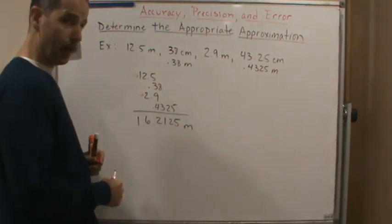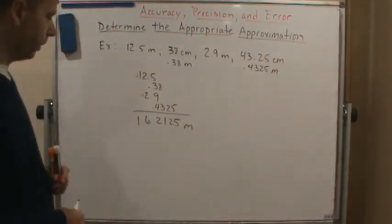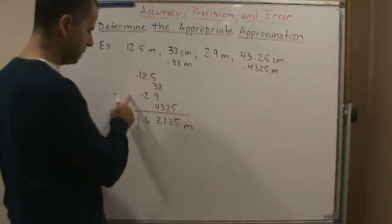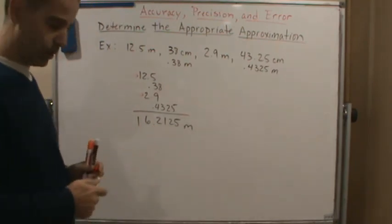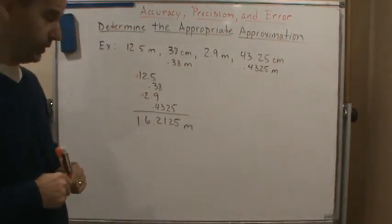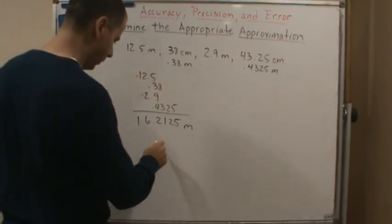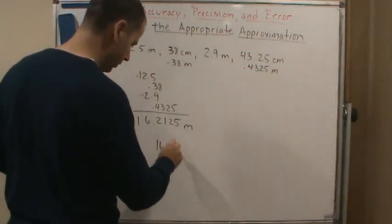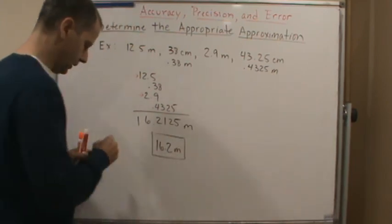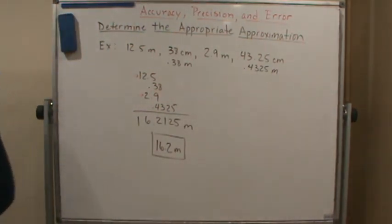This measures up to one ten thousandth of a meter. So these two are the least precise. They're the same. So we're going to round to the tenth of a meter. So our final answer would be 16.2 meters. And that's the most appropriate approximation that we could use.